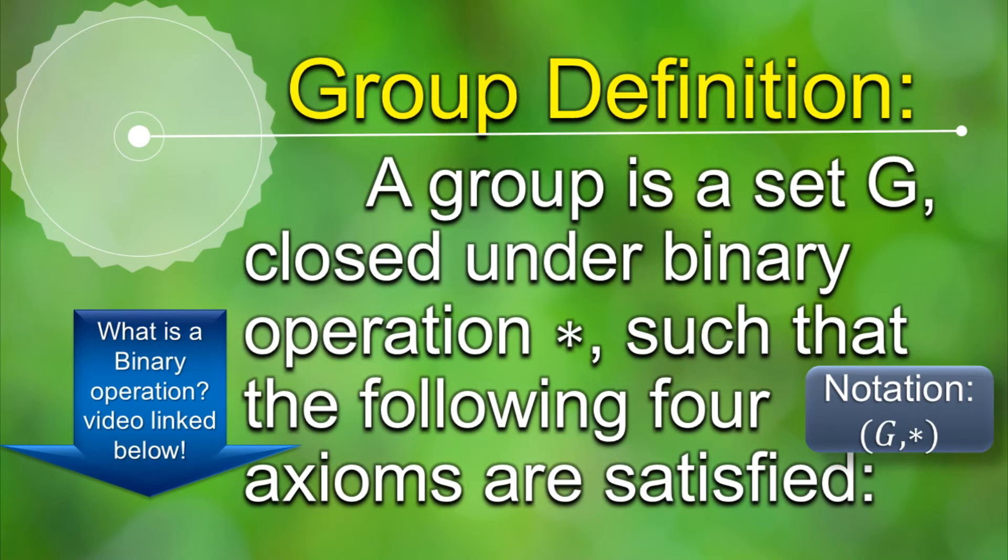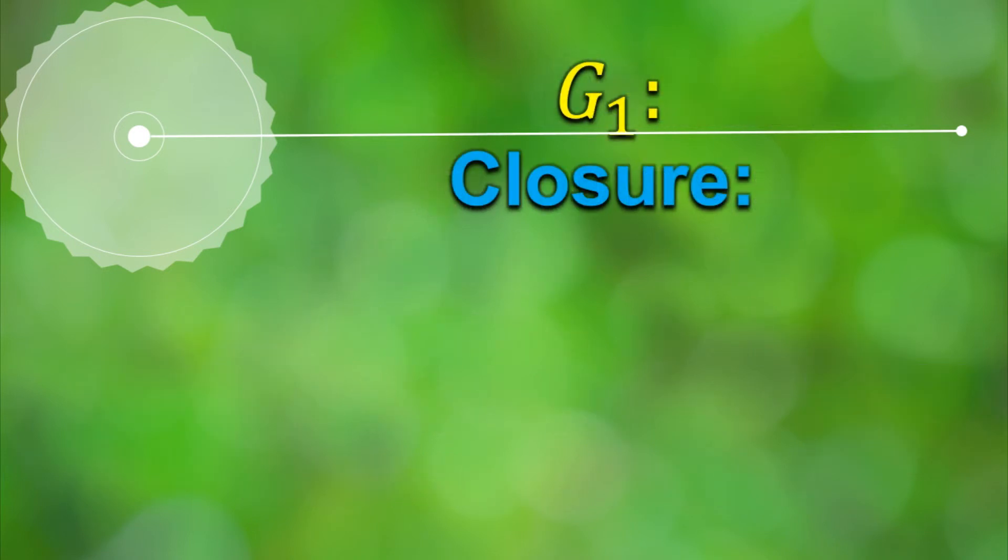Also the notation for a group G under a binary operation star is G comma star enclosed in parenthesis. Now let's move towards the four axioms which are required for a group.